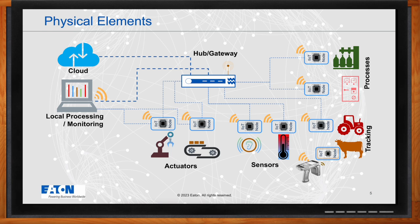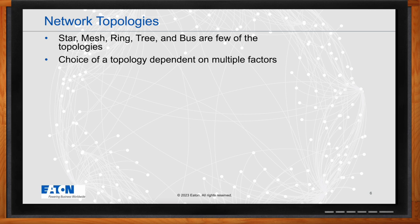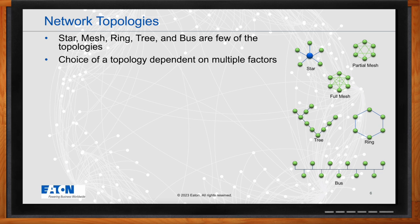The formation and configuration of communication links in IoT deployments are critical to consider. The connectivity and communication architecture play a crucial role in the overall performance, reliability, and security of an IoT system. IoT network topologies, similar to computer network topologies, play a crucial role in determining connectivity structure. Connecting a few sensors and machines may seem straightforward, but as the number of nodes increases to hundreds or thousands, choosing the right topology becomes essential.